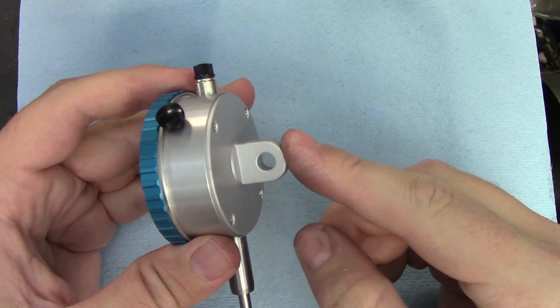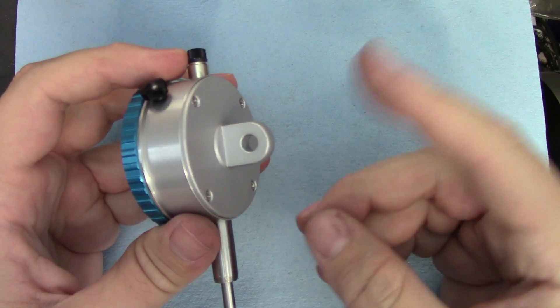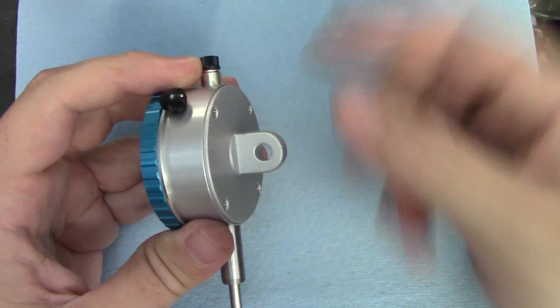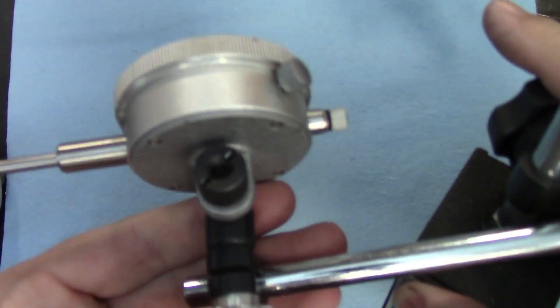Jim specifically asked about the lug back on this type of indicator so let's start there. This dial gets screwed onto a variety of bases through the hole in this lug. You can see that here with this Mighty Mag base as well as with this run of the mill indicator base.